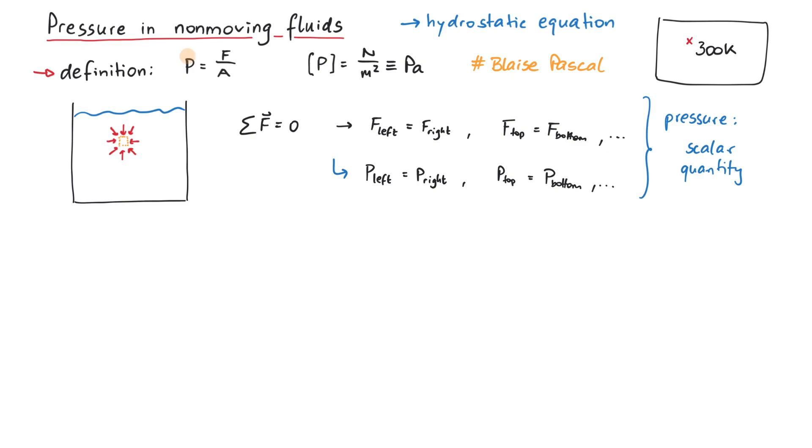But if pressure is a scalar and force is a vector, how does this equation even work? To be precise, we should specify that we are only considering the component of the force vector perpendicular to the area. So in this equation, the symbol F is just one component of the force vector, not the whole vector.